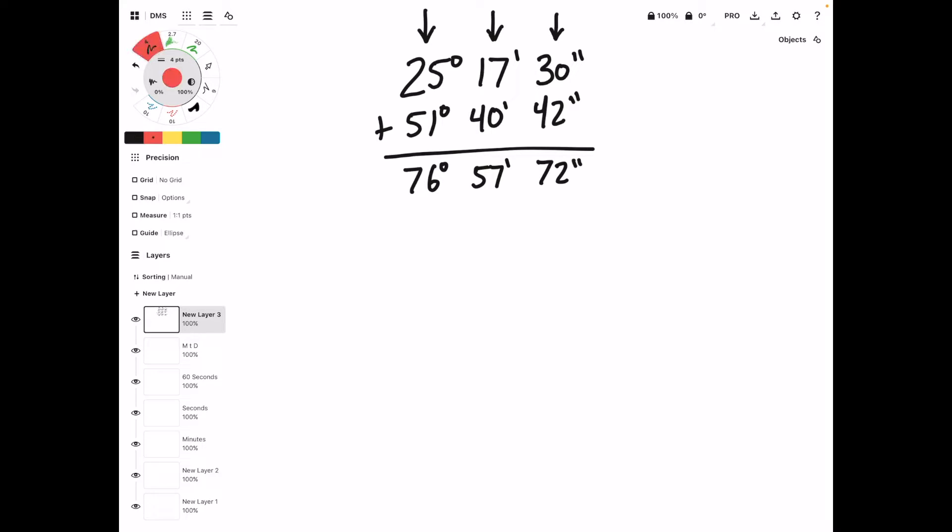So this time, we only have one excess column, and it's the seconds column. So we'll need to subtract 60 from this. Subtract 60 seconds, and then when we do that, we can add 1 minute. And then rewriting this, we get 76 degrees, 58 minutes, and 12 seconds.